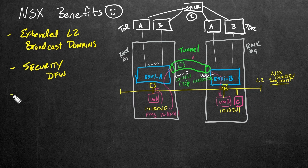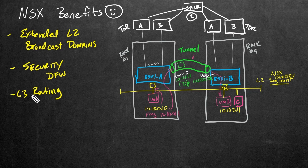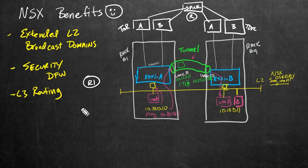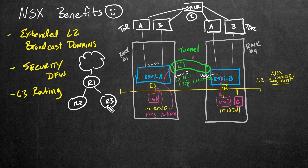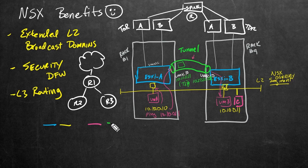Another big benefit of NSX is the ability to do layer-three routing — and with NSX, instead of doing that on our physical environment with physical routers and switches, we can do the routing logically in software. Let's imagine we have router one, router two, and router three, with the latter connecting up to the internet. Down here, let's imagine a few network segments: the 10.10 network, the 10.20 network, the 10.30 network, and the 10.40 network.